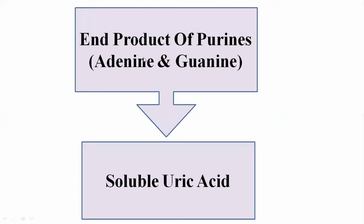Through blood circulation, purines are carried to the liver, where catabolism of purines takes place. The end product of purine catabolism — the catabolism of adenine and guanine — is uric acid. Uric acid is synthesized in the liver, and being soluble, it is excreted through the kidneys in the urine.